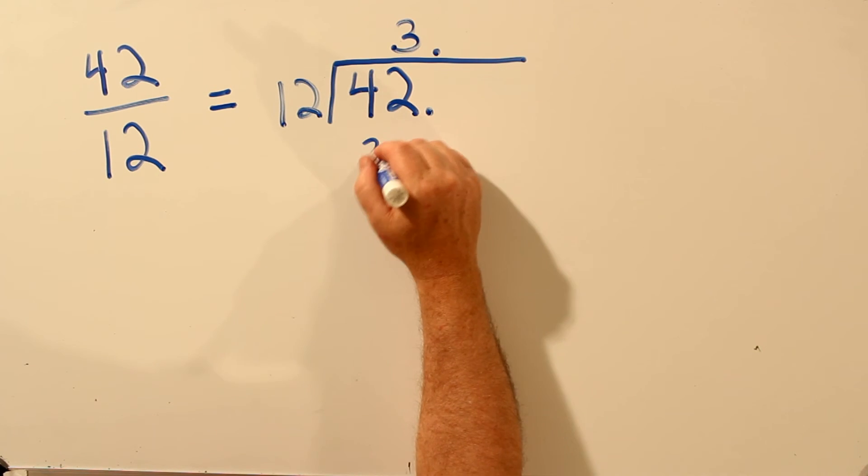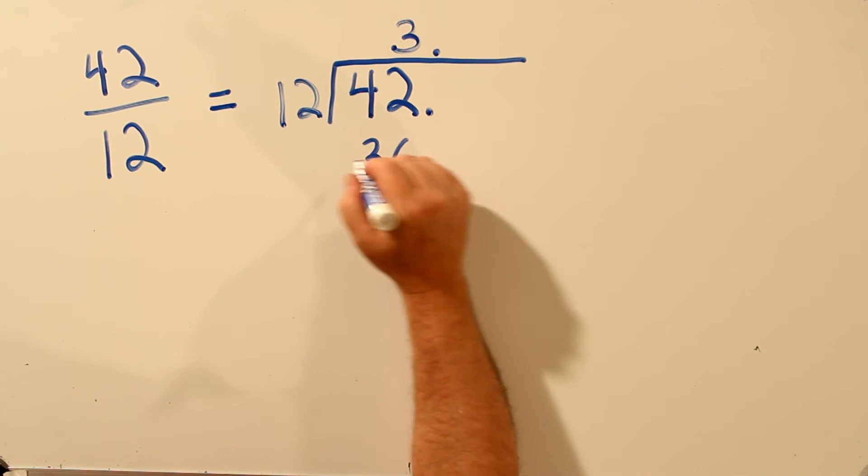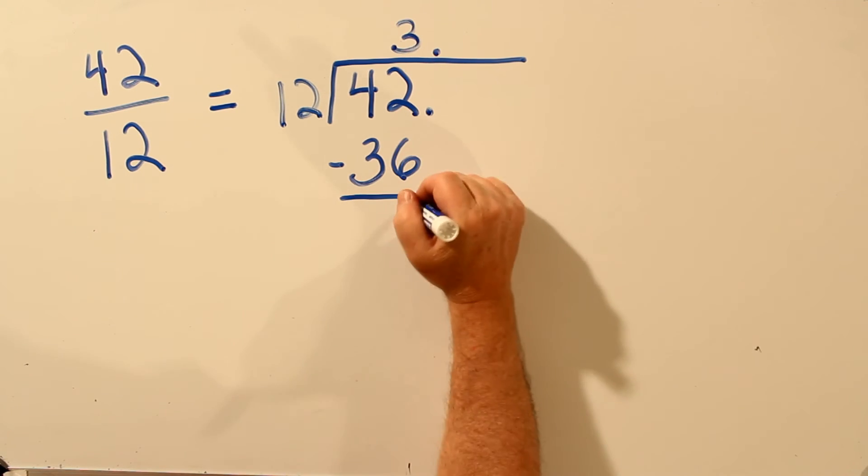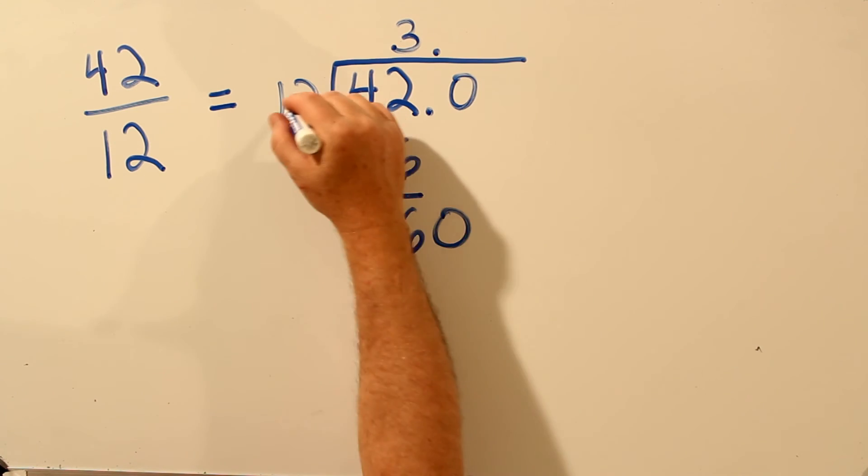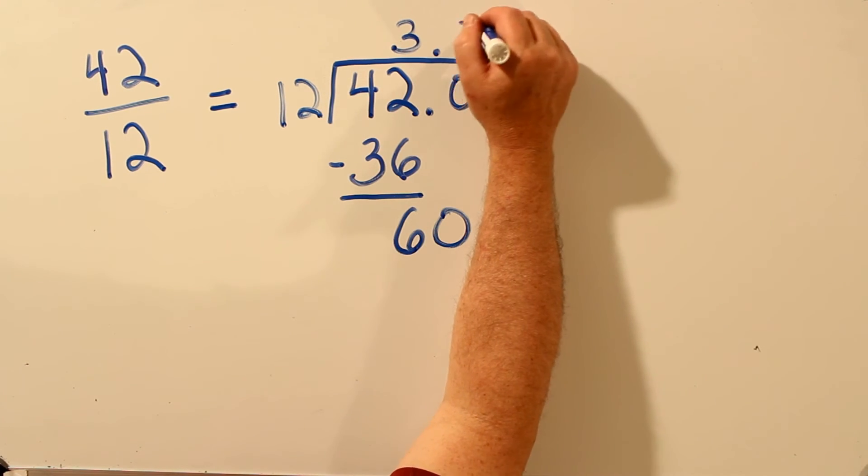3 times 12 is 36. Subtract. 6. Add a 0. 12 into 60, 5 times.